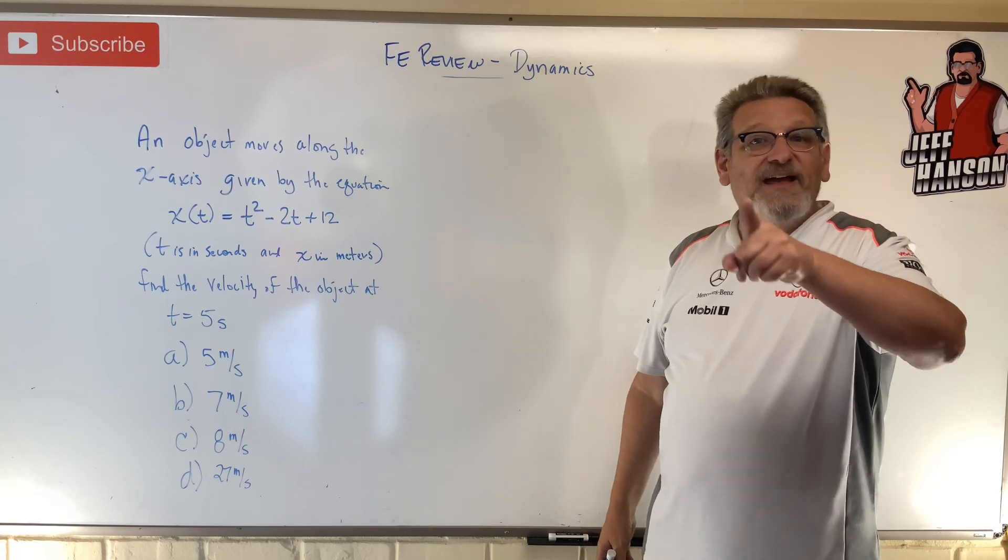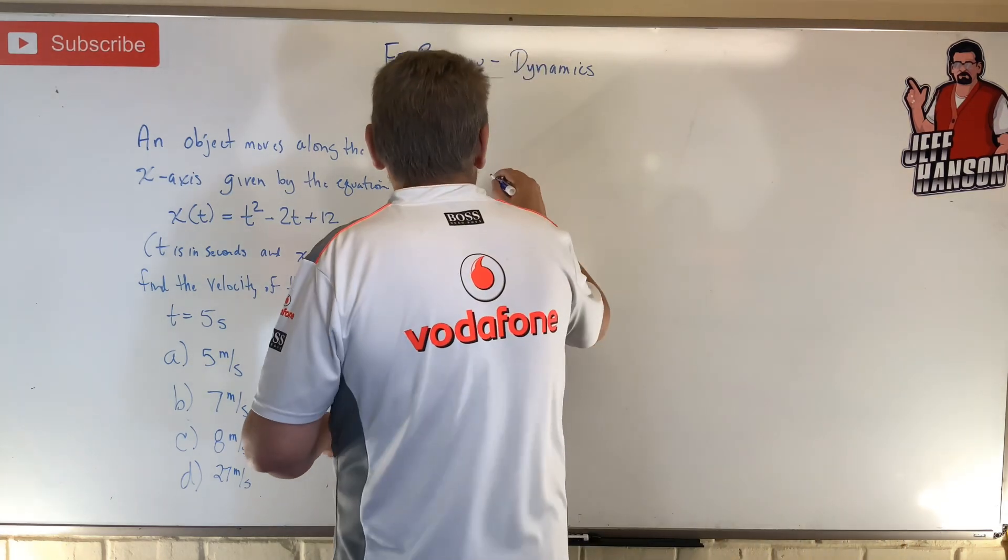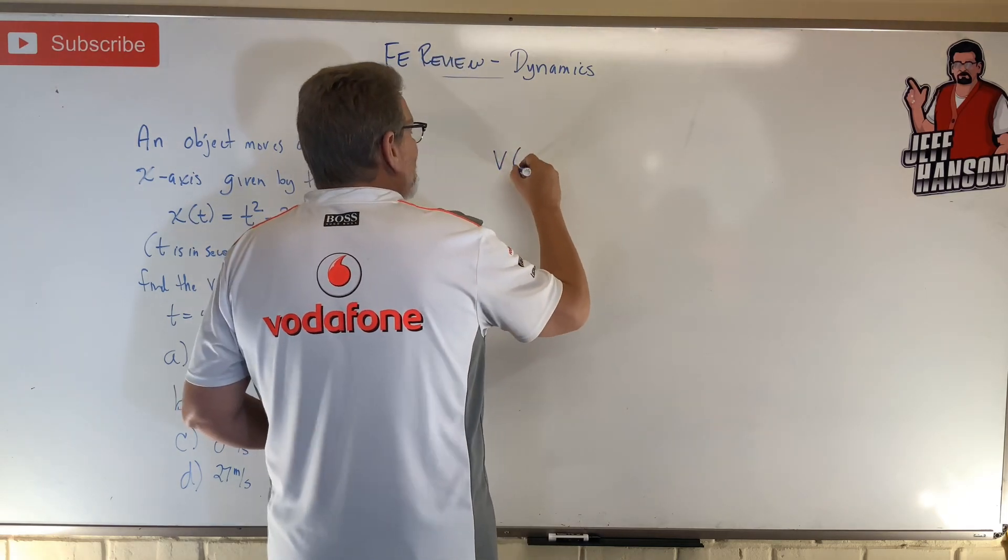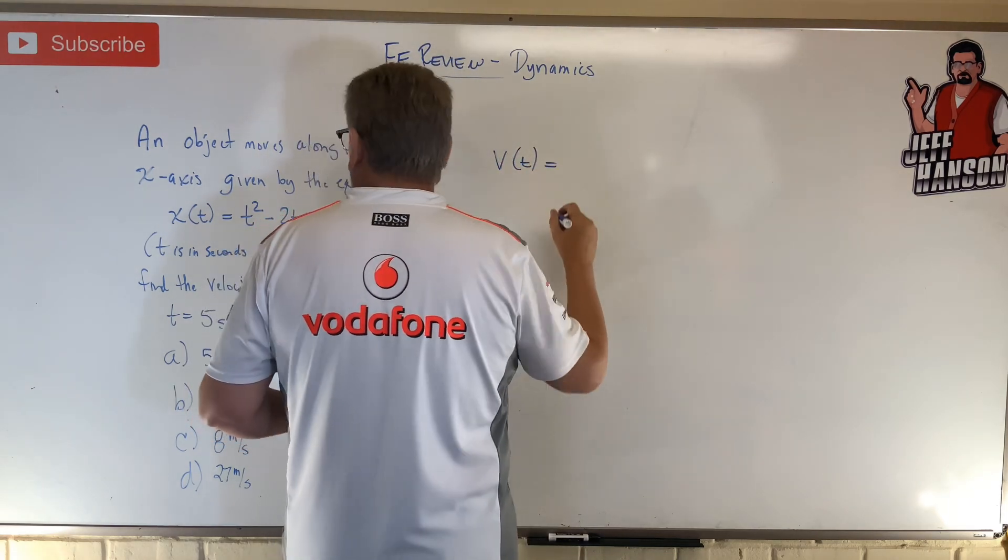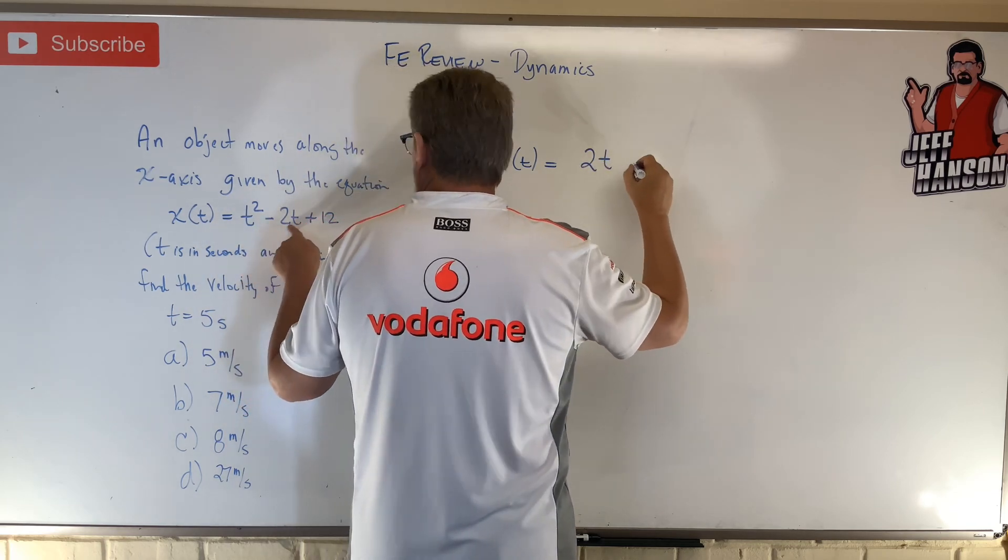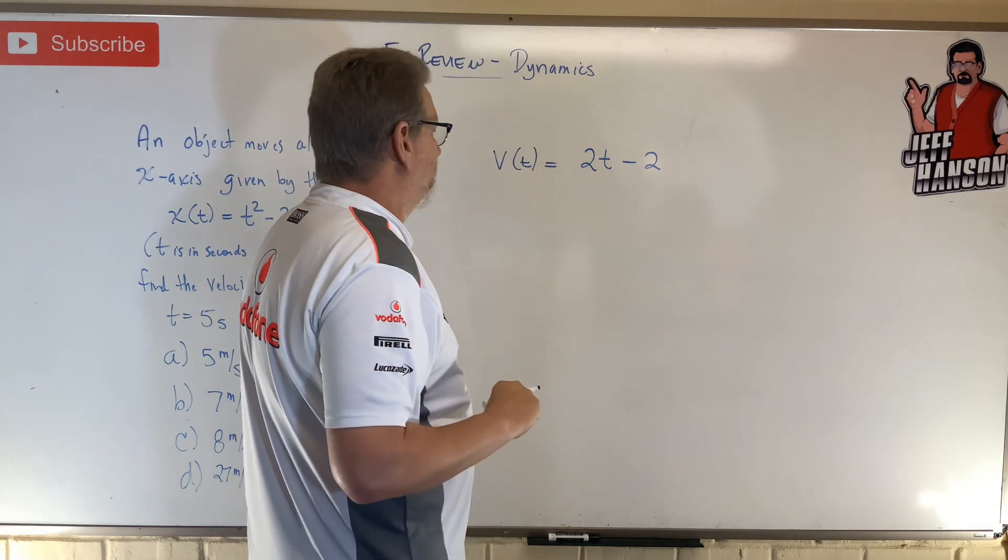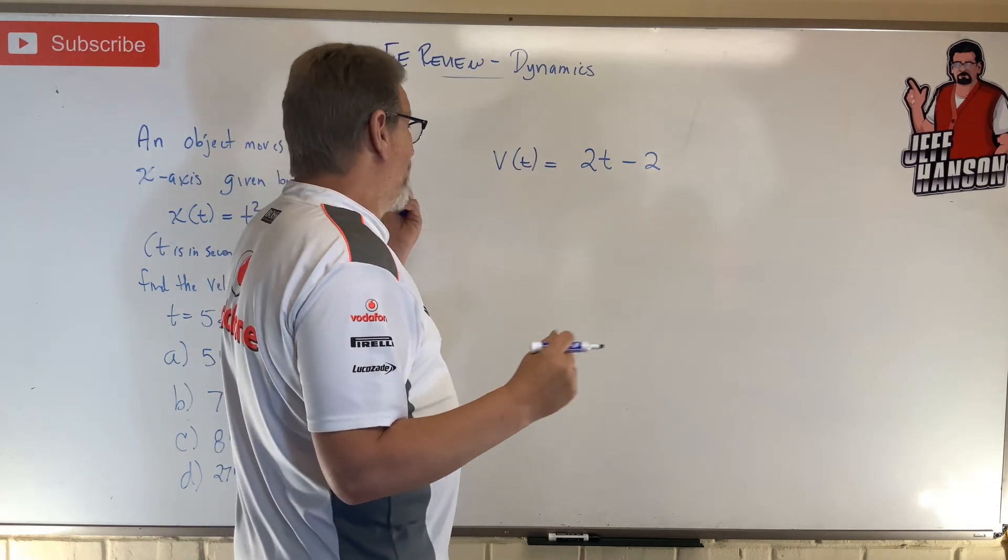You take the derivative of the position function. Okay, so velocity at time t is equal to the derivative of this, which is 2t minus 2. Okay, that's the derivative of that guy with respect to t.